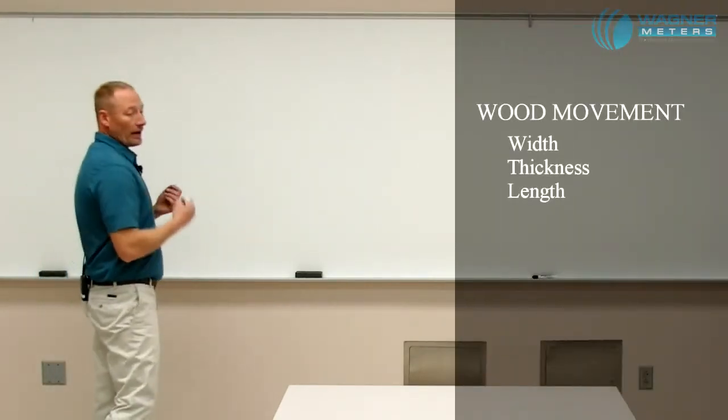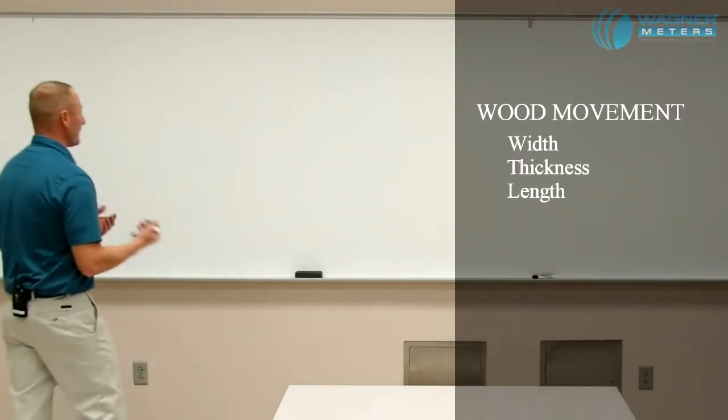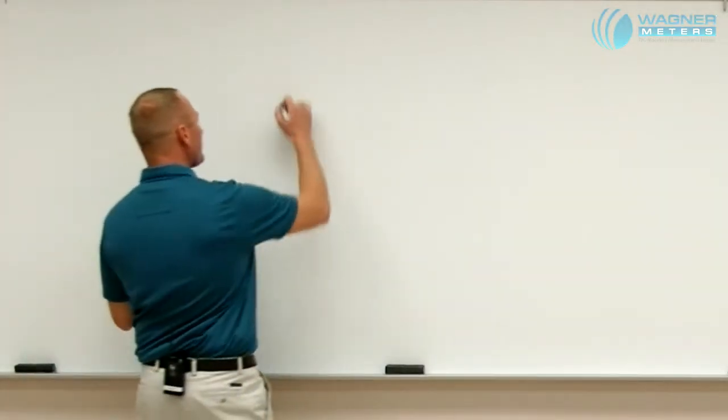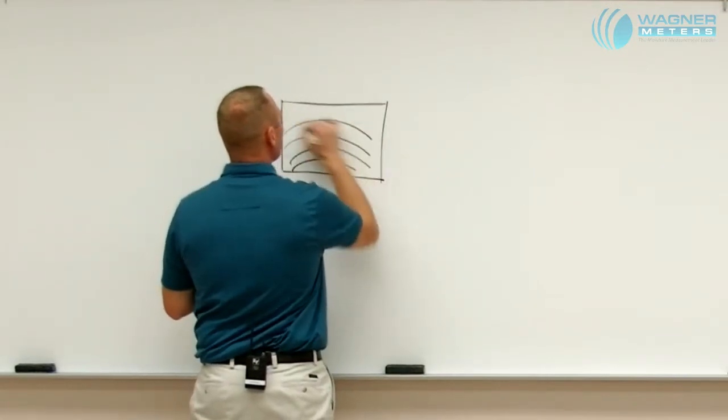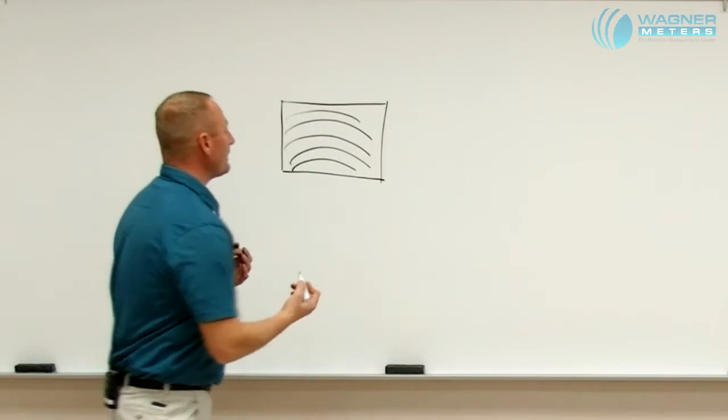We need to understand that wood is going to move differently, whether it be width, whether it be thickness, whether it be length. So we look at wood in several different, or have different faces of wood. So let's use the example of a plain sawn board. So in this plain sawn board, we look at three faces.